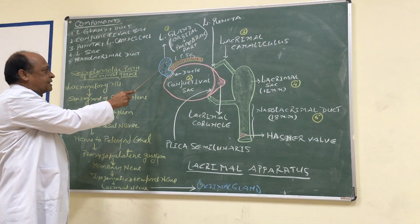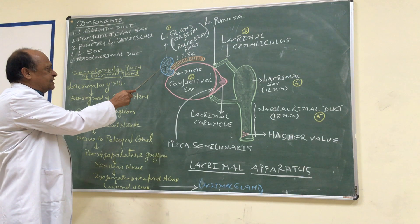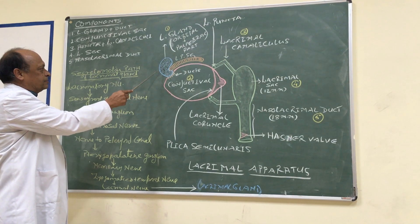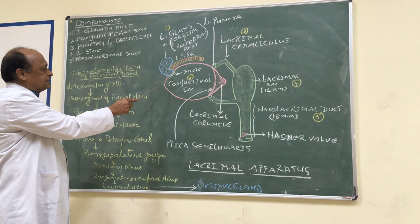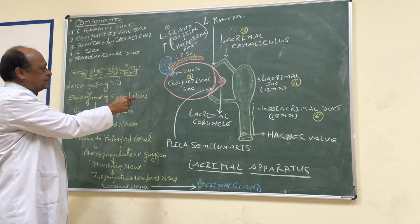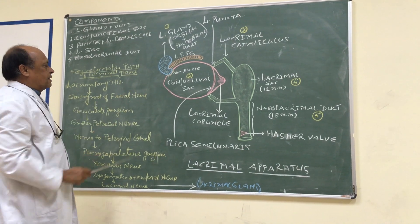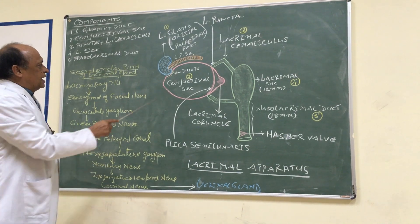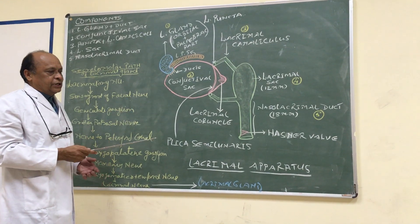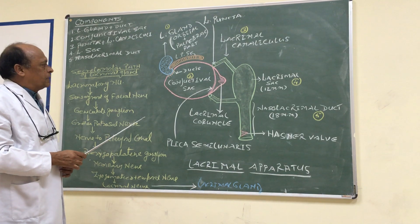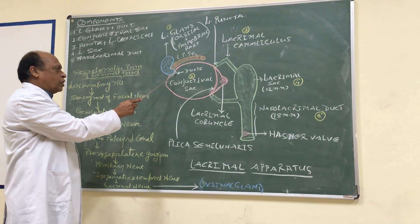This gland secretes lacrimal fluid. A number of ducts arise from this lacrimal gland — these green-colored lines represent the lacrimal ducts — and these ducts open into the lateral part of the superior fornix.